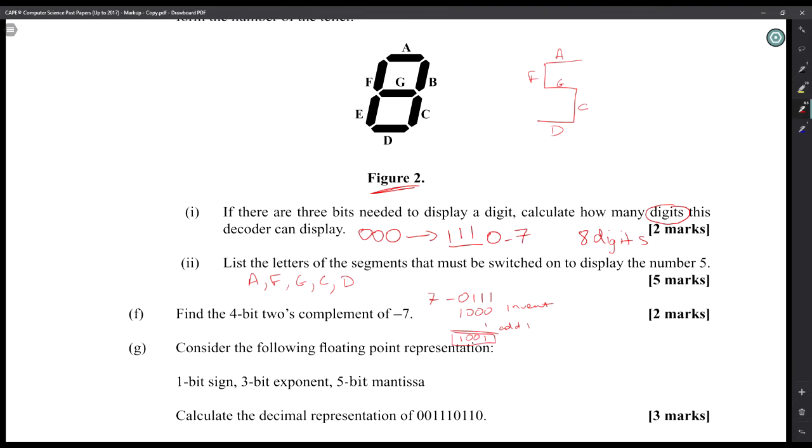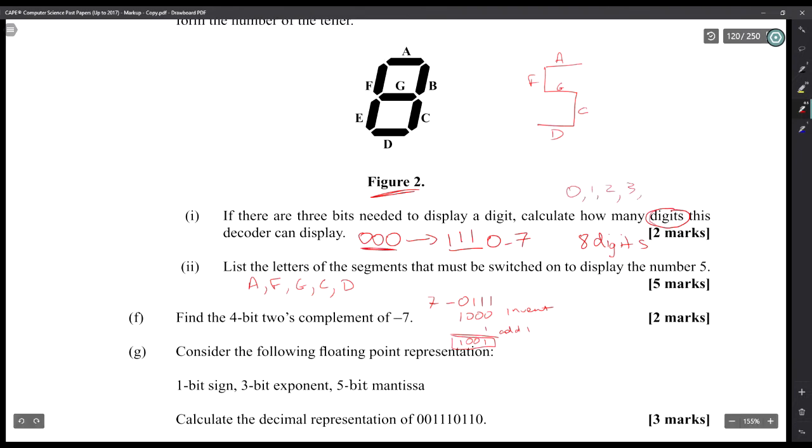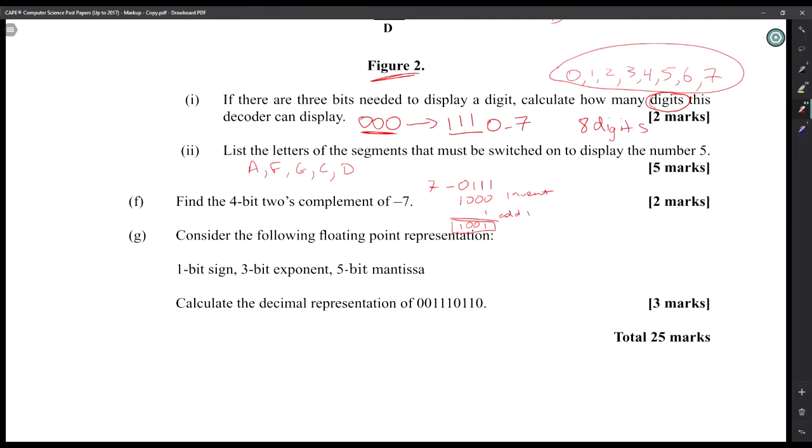Part G: consider the following floating point representation - one bit sign, three bit exponent, five bit mantissa. We are going to give the binary number. For part G, we have to break it up into its parts, which will be 0, which means it's positive. The exponent will be 011, and 10110 will be the mantissa. So 011 - the exponent will become 3.